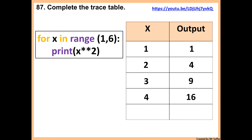Because 4 times 4 is 16. Then x increases to 5, and 5 to the power of 2 gives us 25. We won't get to 6 because it says range(1, 6) — Python does not count 6, so we stop here. That's our table finished.